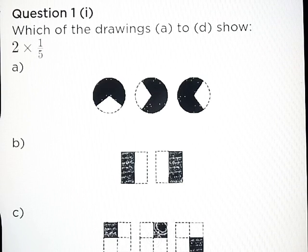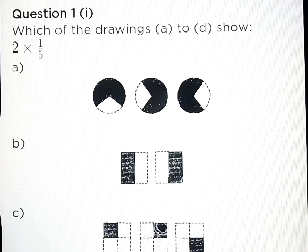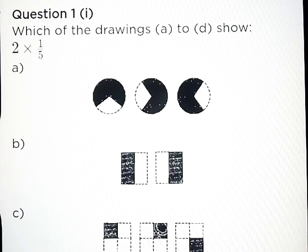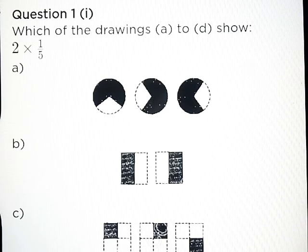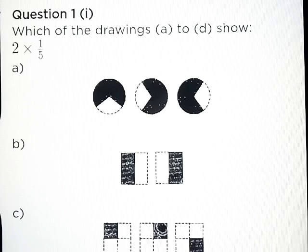Hello friends, today we are going to learn Exercise 2.2 Question number 1, Part A: Which of the drawings part A to part D show 2 into 1 upon 5?